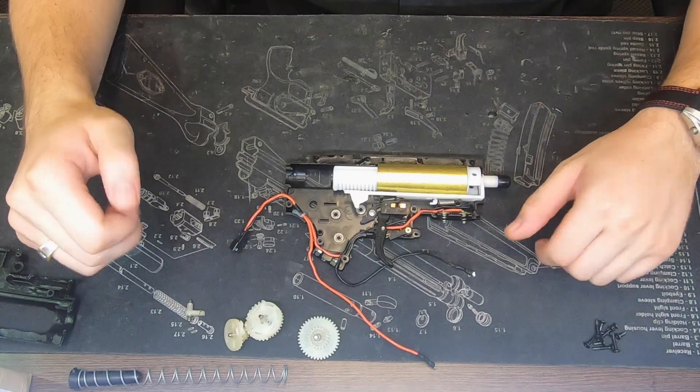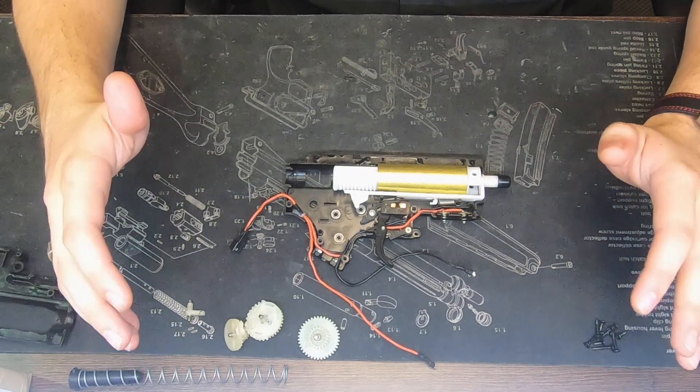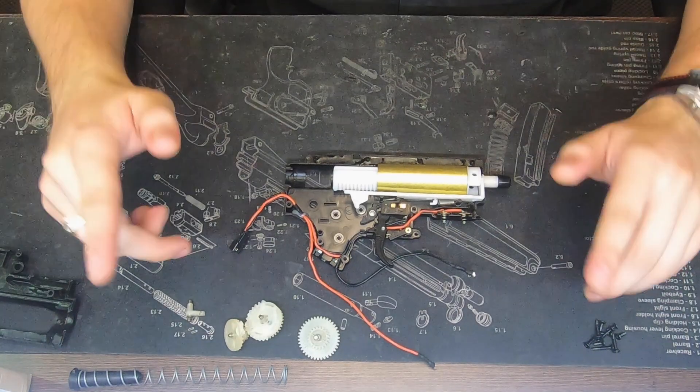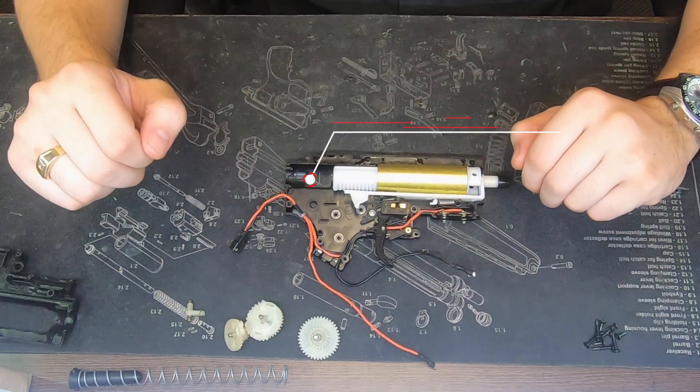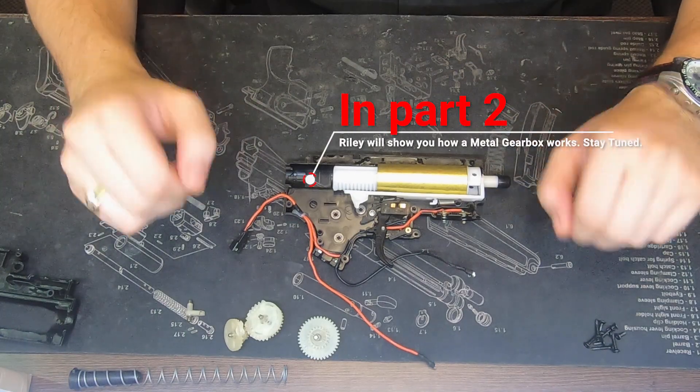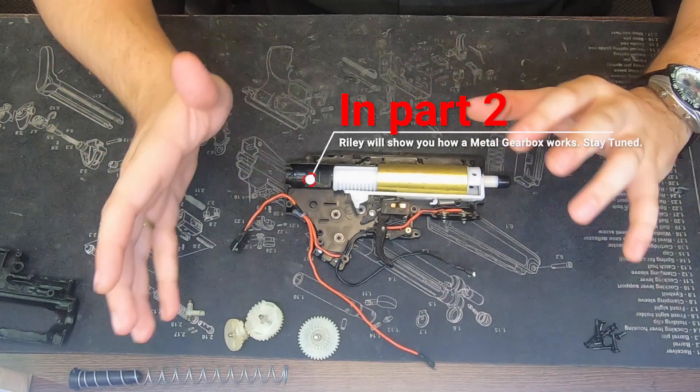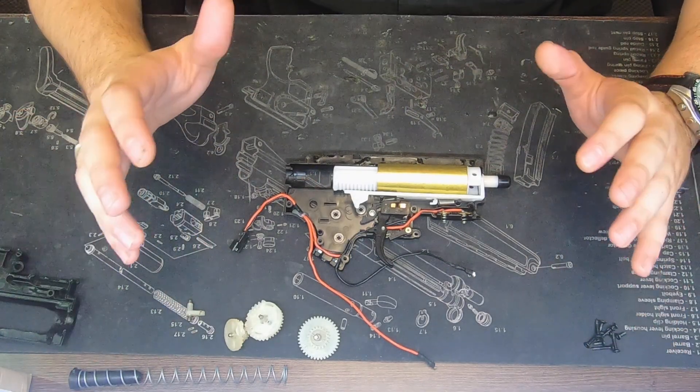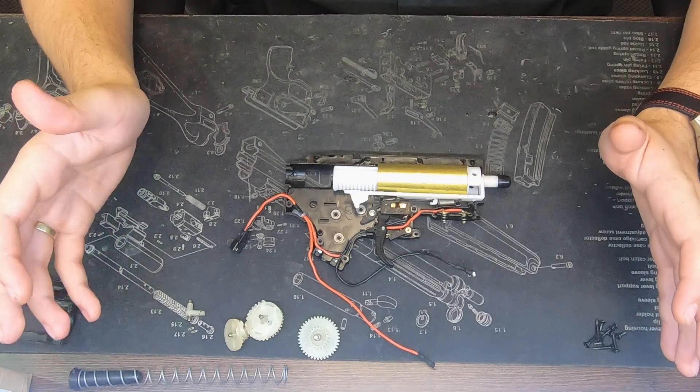That's pretty much it guys, that is the basics of what I would and wouldn't recommend on a nylon housing for beginners. Stay tuned for the next episode, as I'm going to be going over a metal gearbox housing, and what I would and wouldn't recommend, and what to do for beginners as well for an APS line, or anything of that nature.